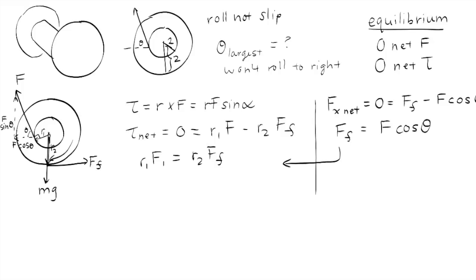Now I can plug this back into our equation here. So we have R1 F is equal to R2 times F cosine of theta. And we know that R1 equals 1 centimeter, and R2 equals 2 centimeters. So now we can solve for theta.